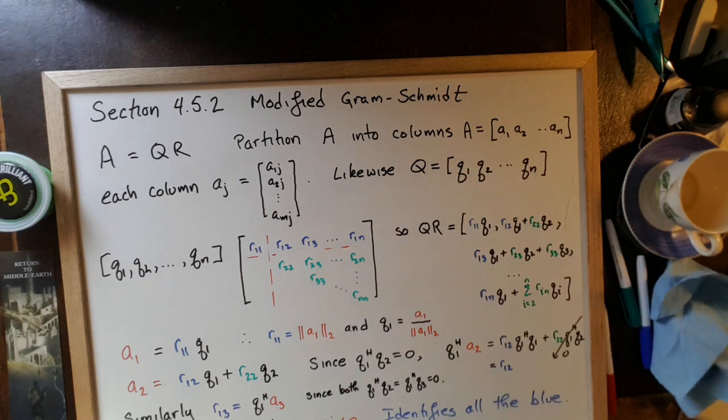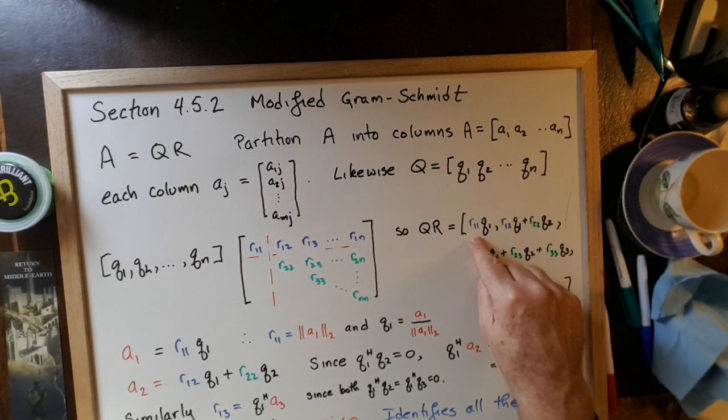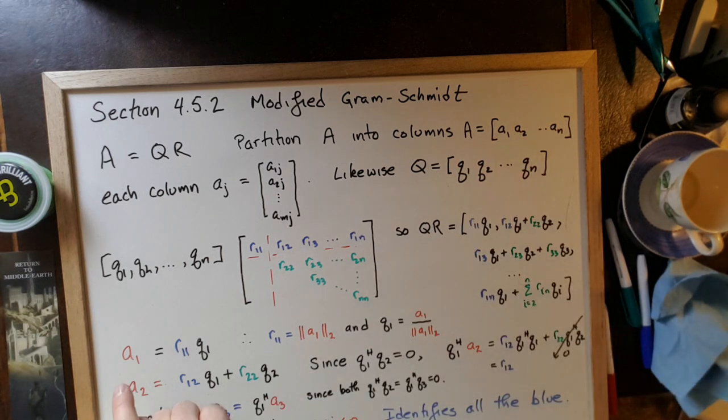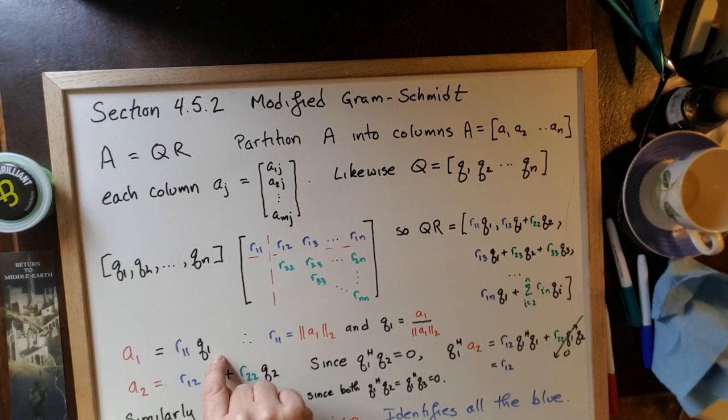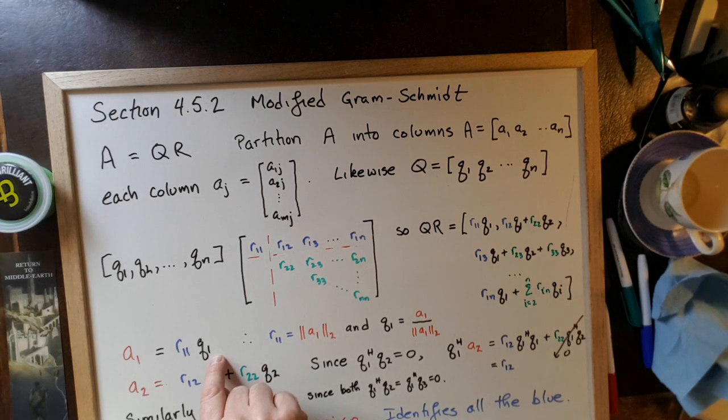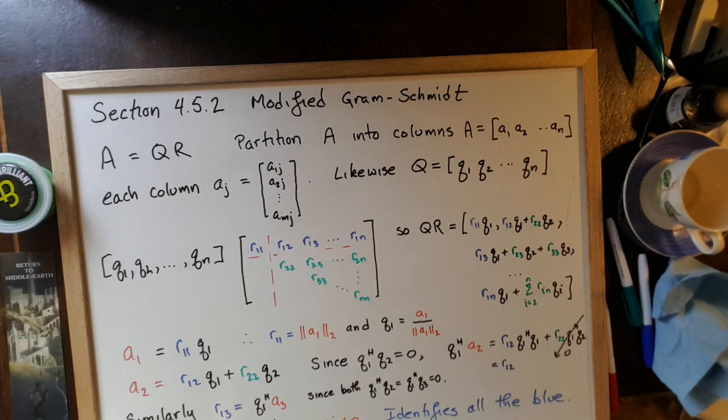Since QR must equal A, we must have that R1,1 times Q1 must equal A1. So we have A1 equals R1,1 times Q1. The only thing we know about Q1 is that it has magnitude 1. The norm of this column must be equal to 1. The 2 norm of this matrix must be equal to 1.